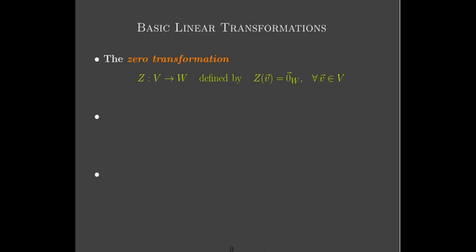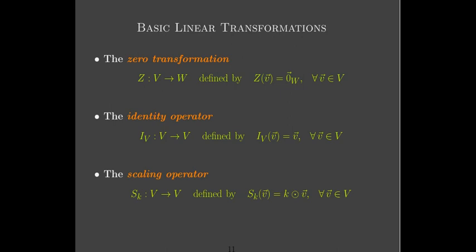Let's look at some very simple linear transformations between vector spaces. We still have a zero transformation, which maps every vector in V to the appropriate zero vector in W — so only one vector is targeted in W, the zero vector. With the identity operator, it has to be an operator because every vector gets mapped onto itself. And then we have the scaling operator, where every vector gets mapped onto a constant multiple of itself.